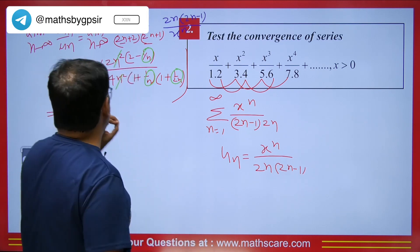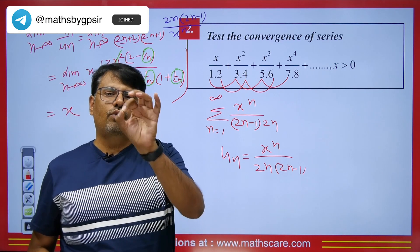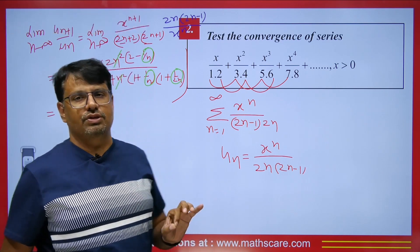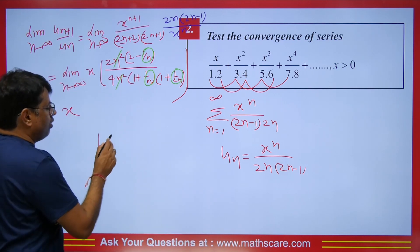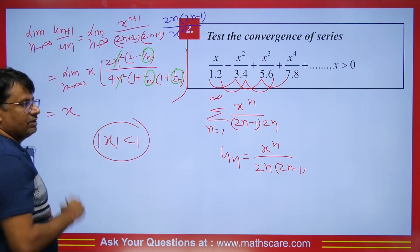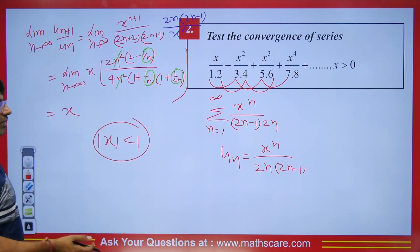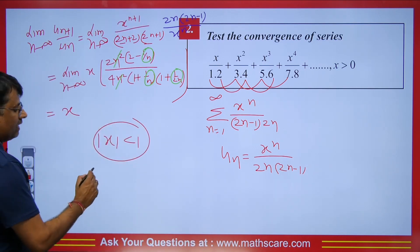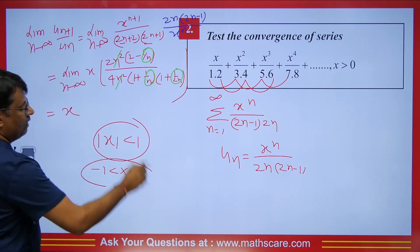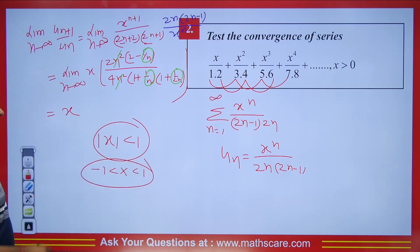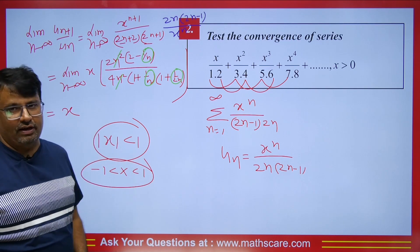Whenever we perform the ratio test the limit should be less than 1 for convergence, so |x| < 1. The series converges for x between -1 and 1. Students often get confused about what happens at the endpoints x = ±1.